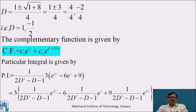This is a linear differential equation with constant coefficients. Its auxiliary equation is 2D² - D - 1 = 0, with roots D = (1 ± √(1+8))/4 = (1 ± 3)/4, giving D = 1 and D = -1/2. Therefore the complementary function is CF = c₁e^z + c₂e^{-z/2}.